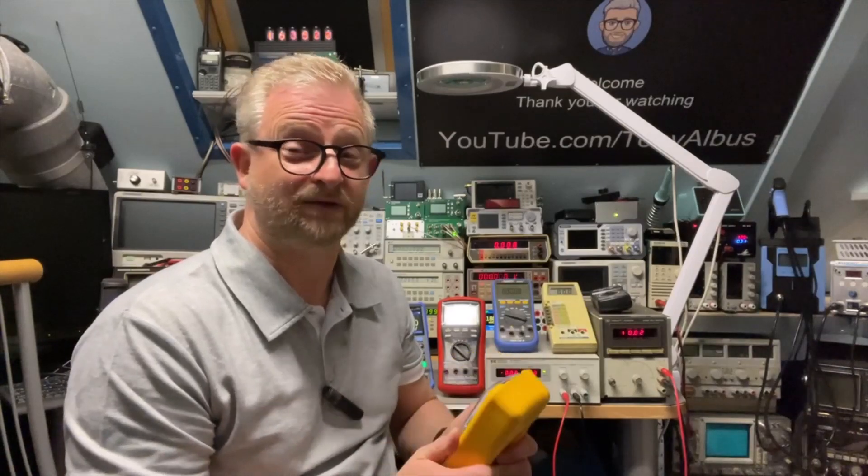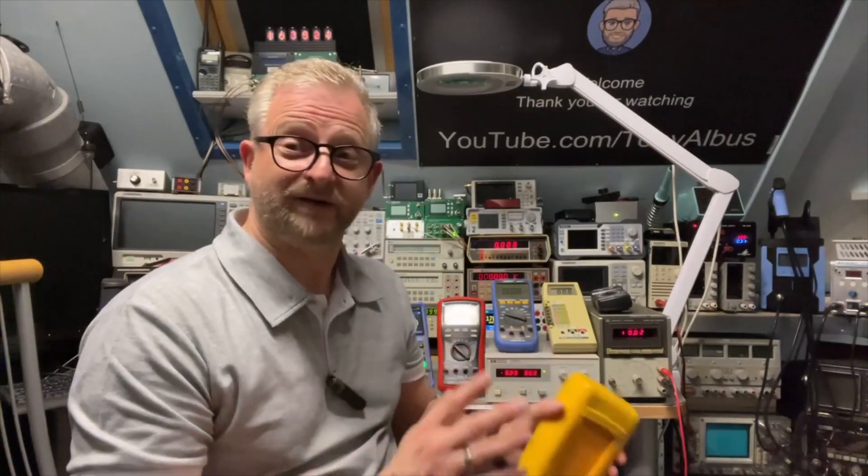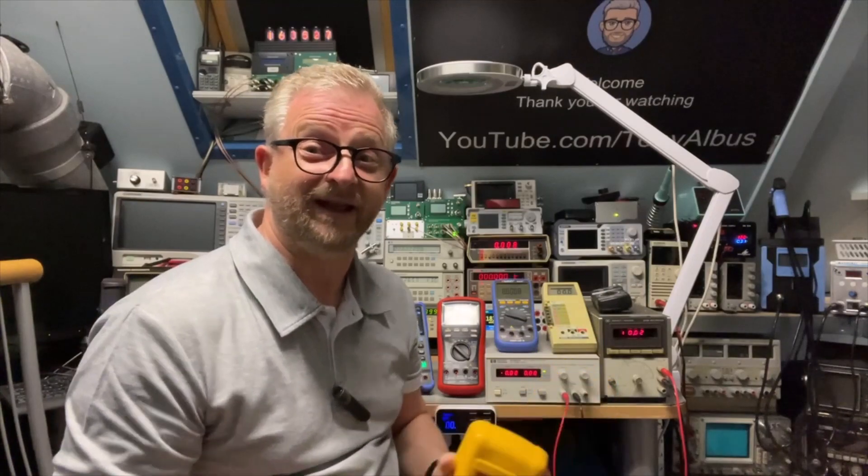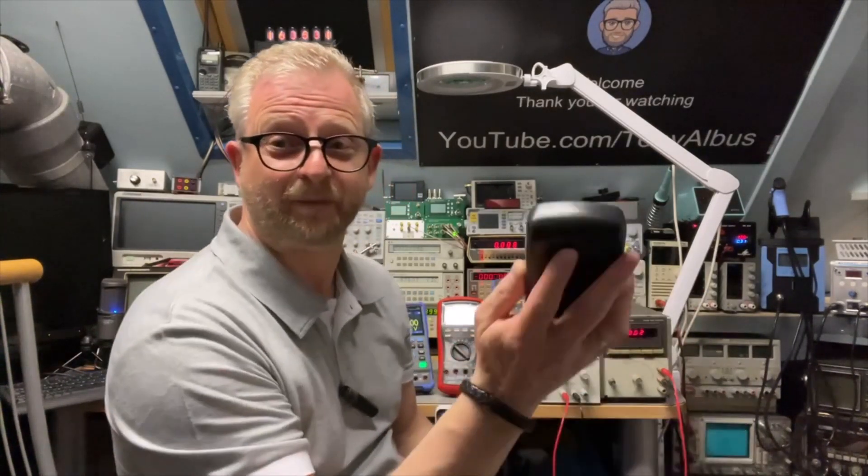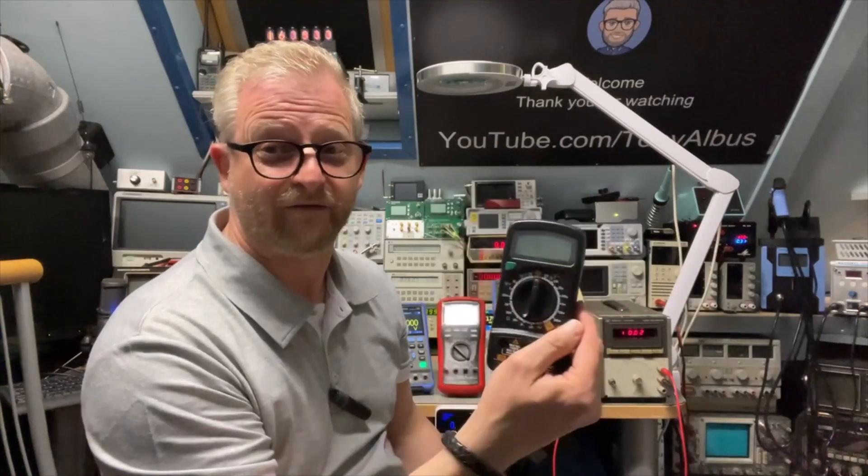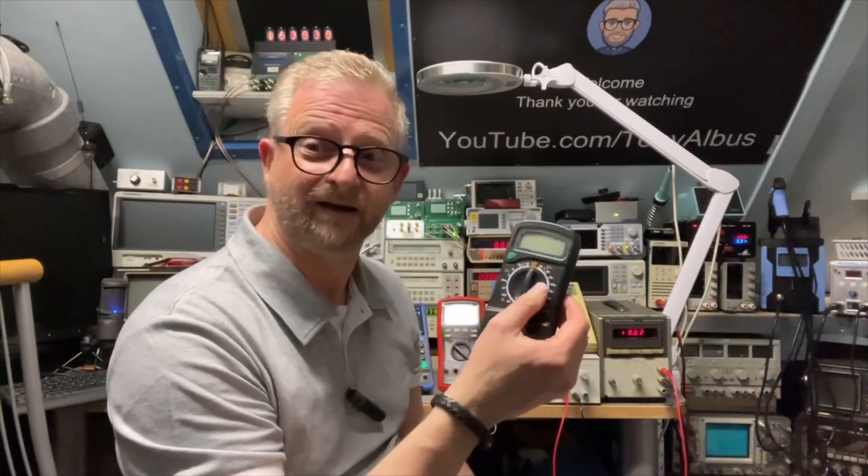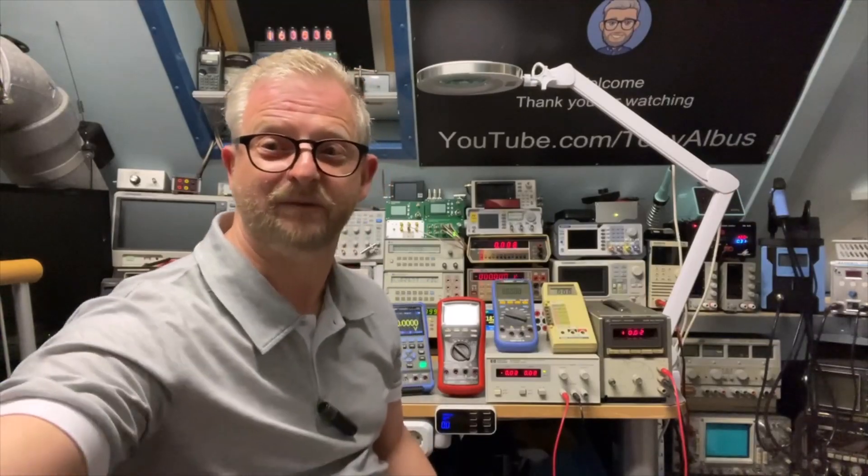But then, of course, we had the digital multimeters, and I tried looking if I could find one with three digits, and I couldn't. Even the cheapest one here already is 3.5. And why we need 3.5? Well, let me show you that by an example.